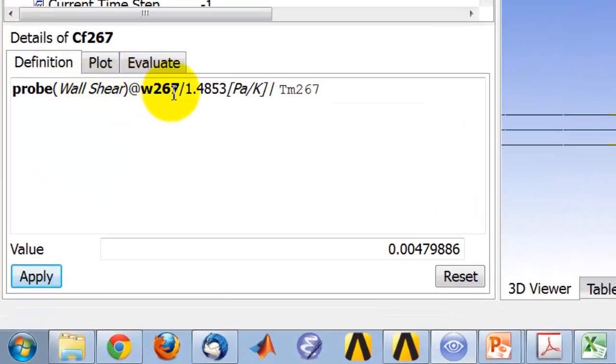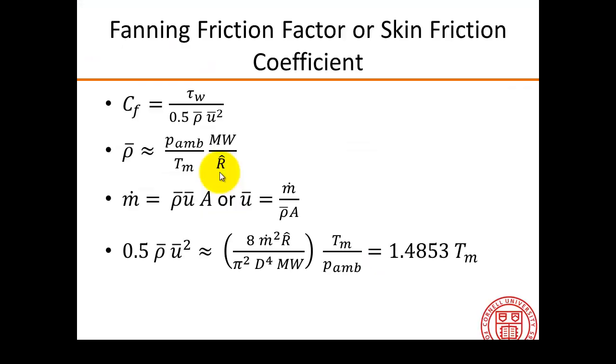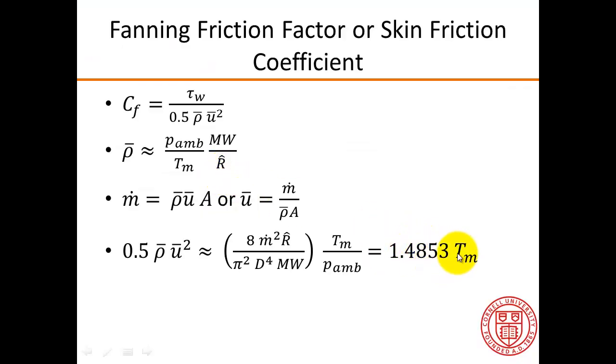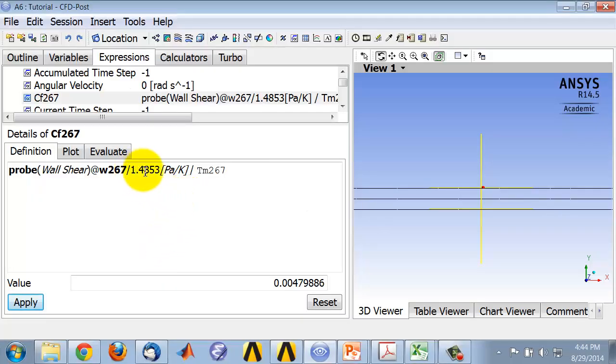I can now probe the wall shear at that location. That's what I did. All these functions and variables you can get by right-clicking. I divided by that factor which I had in my PowerPoint slide, gave it the appropriate units, and then I had the mixed mean temperature at that location, which I already calculated. So the denominator is that, and that's the implementation.